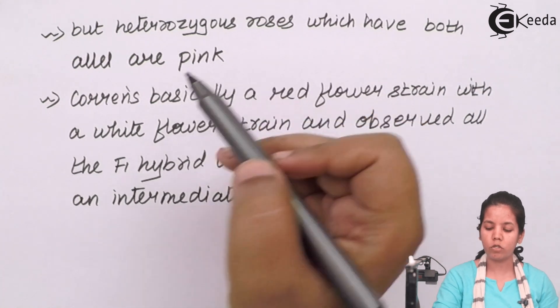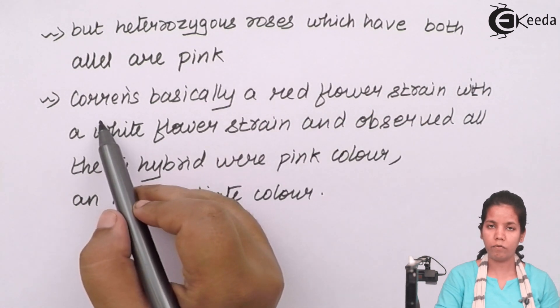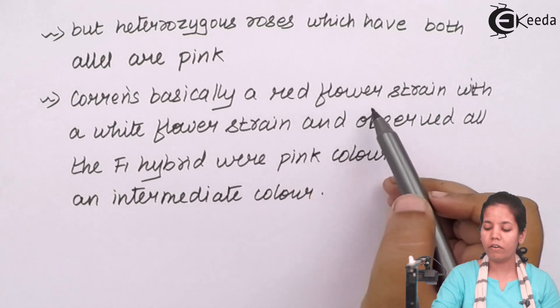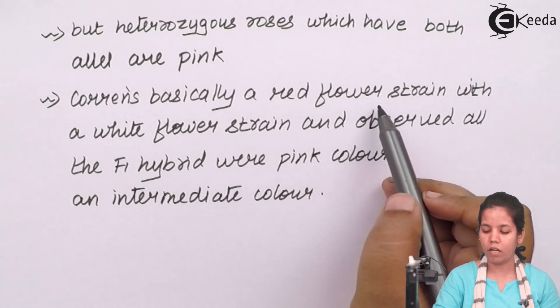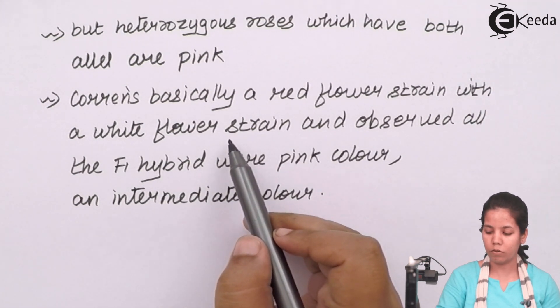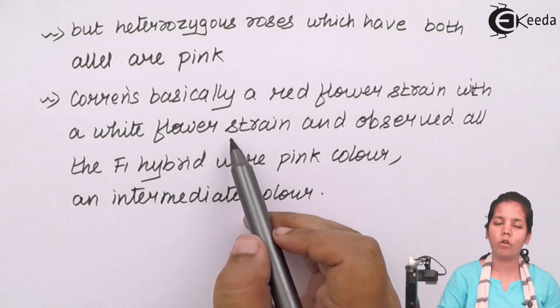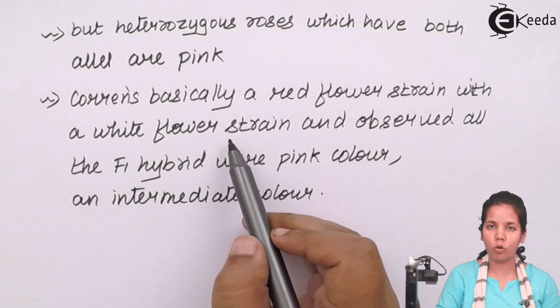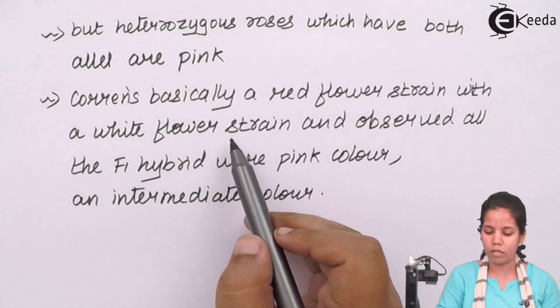The basic experiment which Correns did—one of the disciples of Gregor Mendel—was he basically crossed a red flower strain or a red flower with a white flower strain. Red was dominant, everybody knew that, and white was the recessive, but what he observed was the law of incomplete dominance, the law of partially allowing another partner to grow or to proceed its quality.